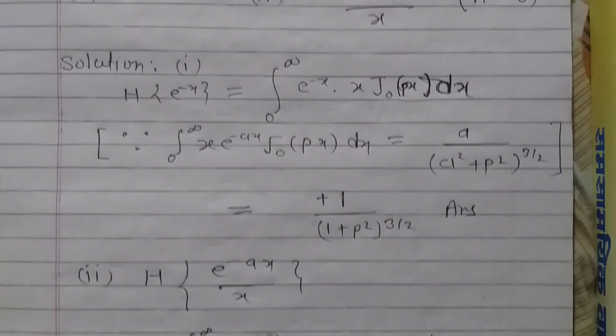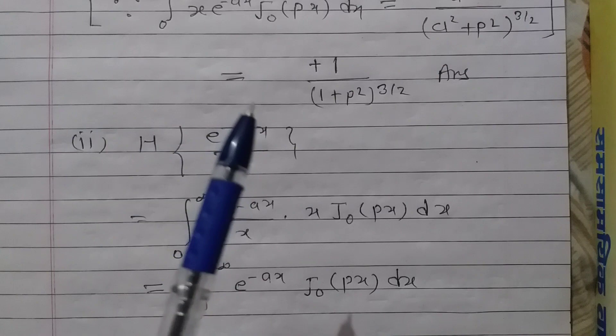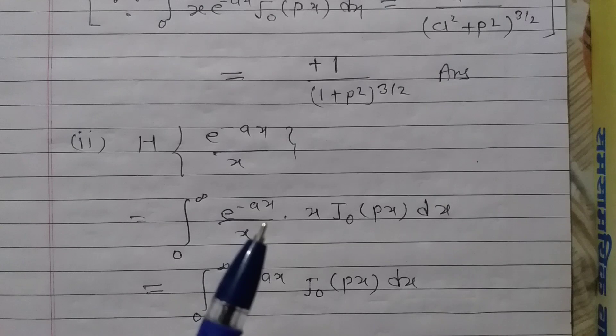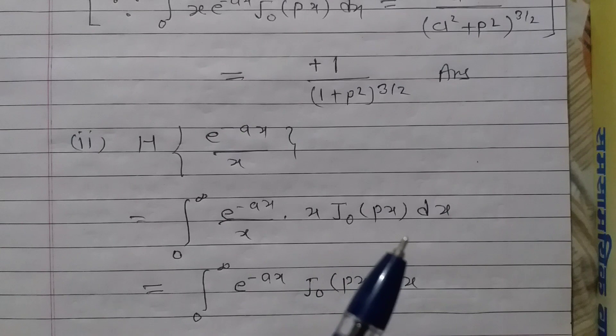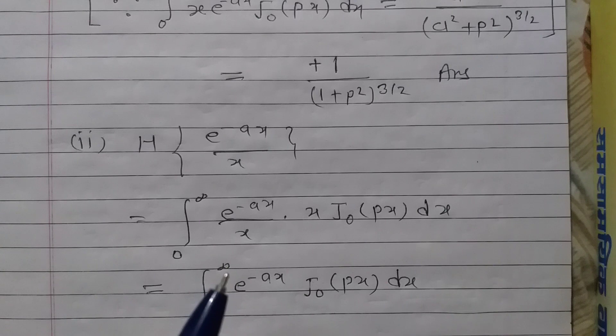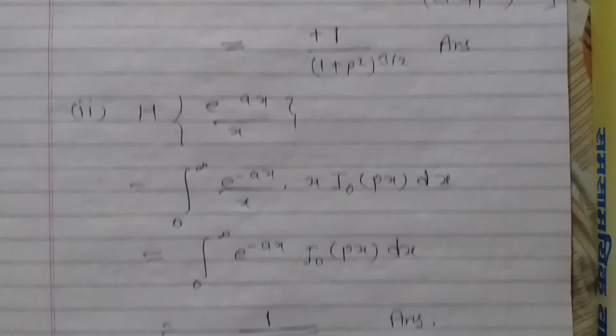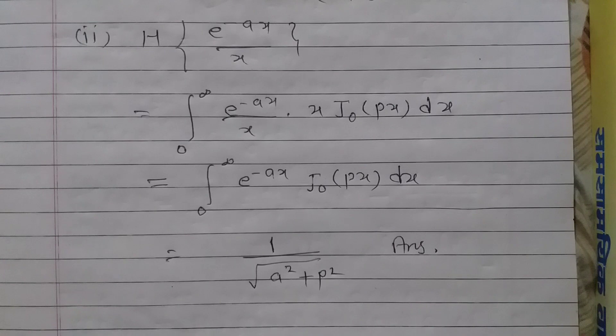Now let us move on to example number 2. We have to find the Henkel transform of e raised to the power minus ax upon x. By definition of the Henkel transform, it will be the integral over 0 to infinity of e raised to the power minus ax upon x, times the kernel x J₀(px). This is a standard integral in the Bessel's functions chapter, and its value equals 1 upon the square root of a² plus p².